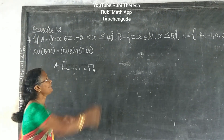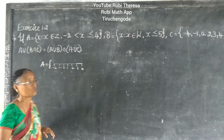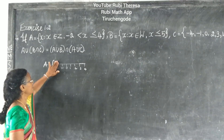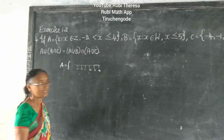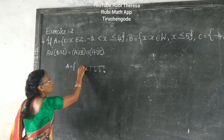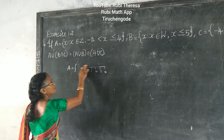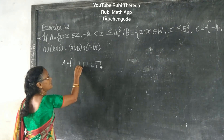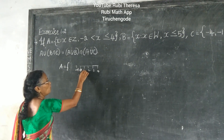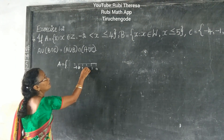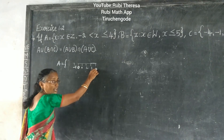Here it is given greater than minus 2. So is it necessary to include minus 2? No — it is strictly greater than. So we start from minus 1. Next: 0, 1, 2, 3, 4.